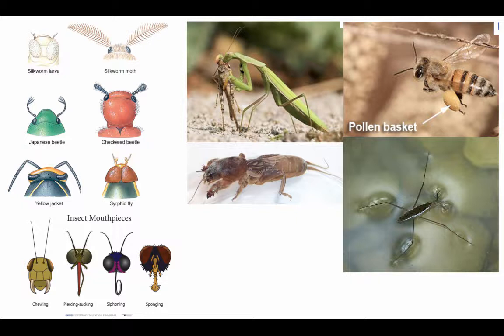The legs themselves can also be specialized for different functions. The anterior pair of legs in a praying mantis are adapted for seizing and grasping prey. A honey bee has legs modified as a pollen basket for carrying pollen back to the hive. Some insects have very fine spindly appendages adapted for walking on water — distributing pressure so they don't break the surface tension — like a water strider.